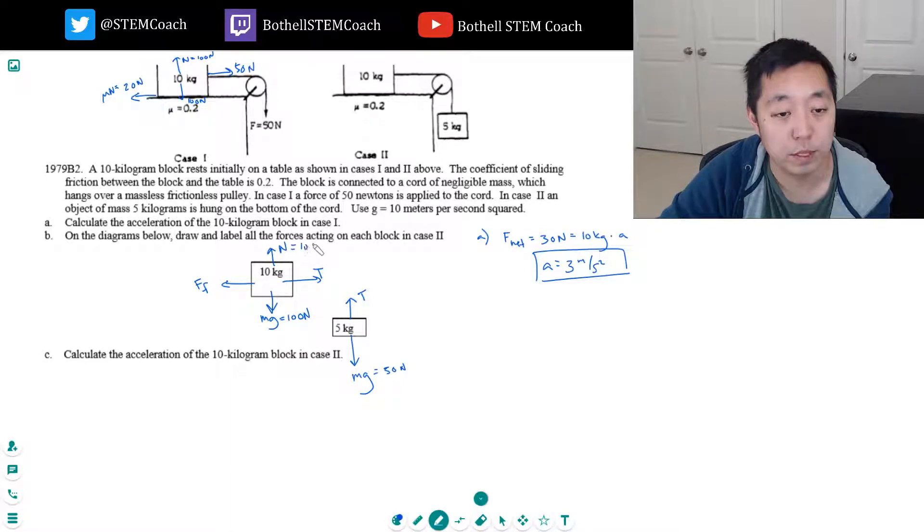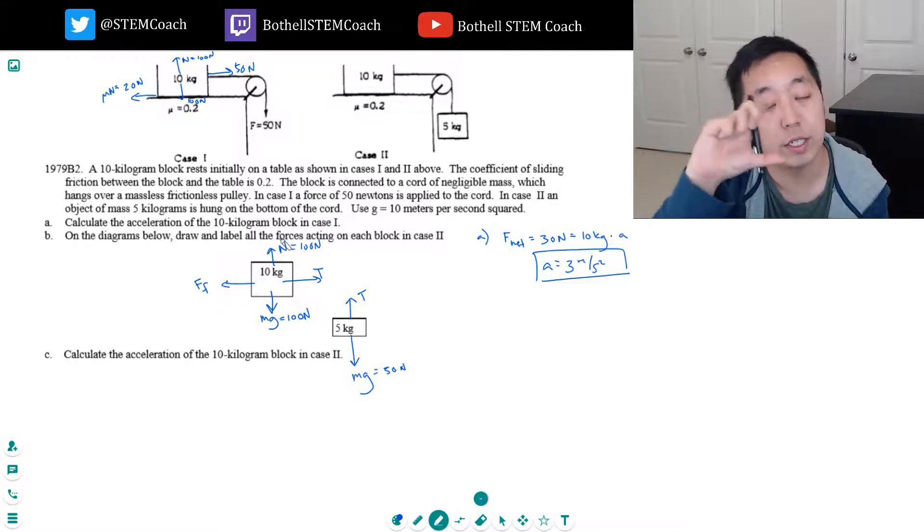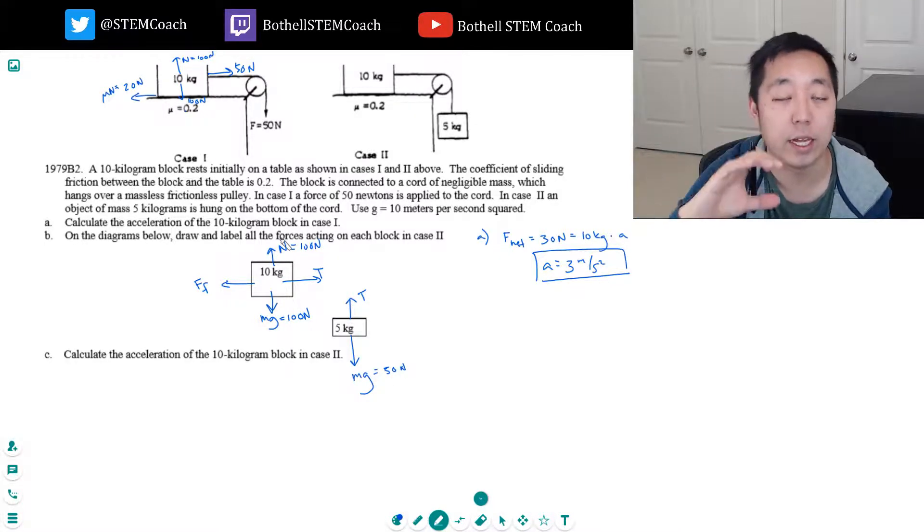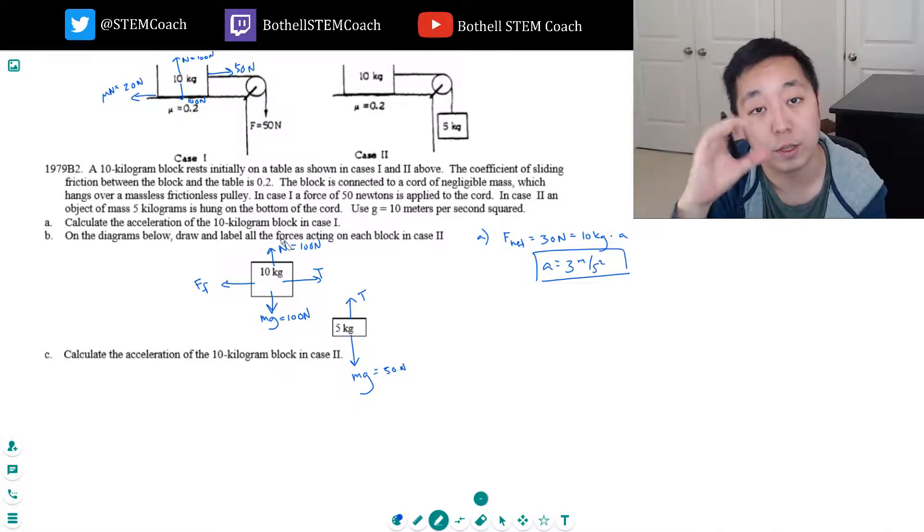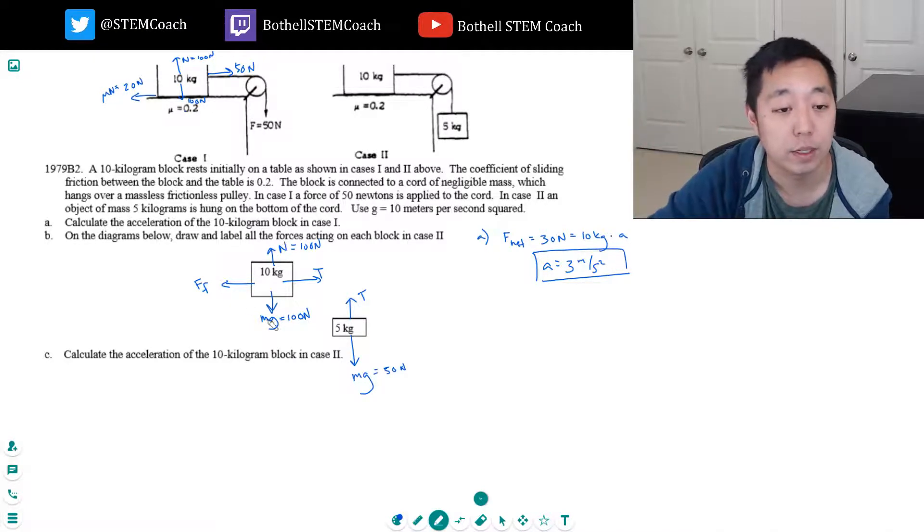And the normal force here must be 100 newtons. Right? Because in the y direction, if there was a net force in the y direction, it means that they must be accelerating in the y direction, which is not what's happening. Force of friction is mu n which is 20 newtons.